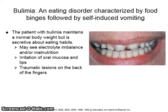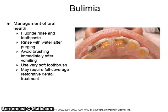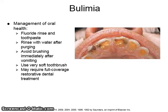Bulimia is an eating disorder characterized by food binges followed by self-induced vomiting. The patient with bulimia maintains a normal body weight but is secretive about eating habits. The patient may exhibit an electrolyte imbalance and/or malnutrition, irritation of oral mucosa and lips, as well as traumatic lesions on the back of the fingers. Management of the oral health of a bulimic patient includes fluoride rinses and fluoride toothpaste, rinsing with water after purging, avoiding toothbrushing immediately after vomiting, use of a very soft toothbrush, and may require full coverage restorative dental treatment to correct the lost enamel.